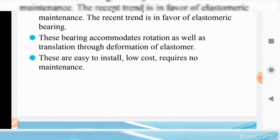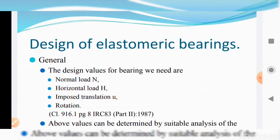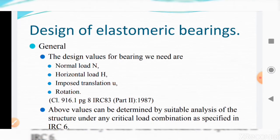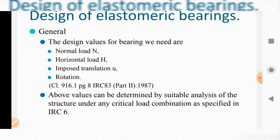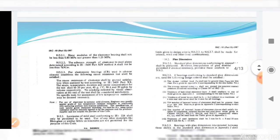The only probable causes of failure of an elastomeric bearing are inferior material, incorrect design, or improper installation. For design, the required values include the normal load from the dead weight of the superstructure, live load from vehicles or pedestrians, loads from attachments like crash barriers and handrails, and horizontal loads from vehicle acceleration or braking. These values are specified in clause 916 on page 8 of IRC 83 Part 2, 1987.